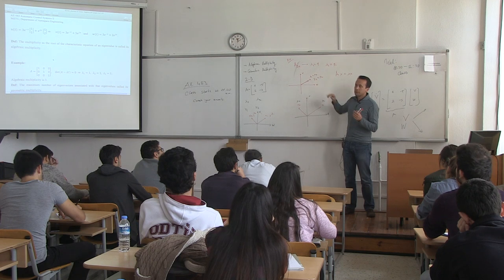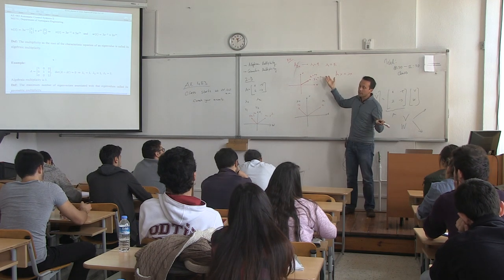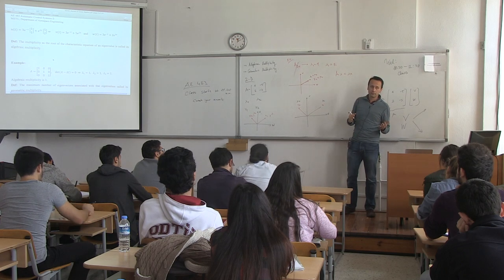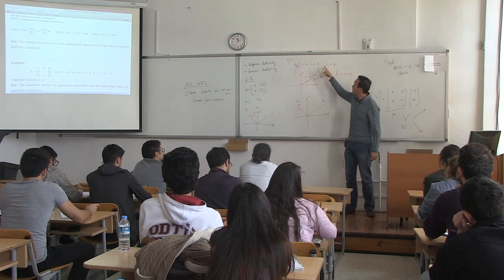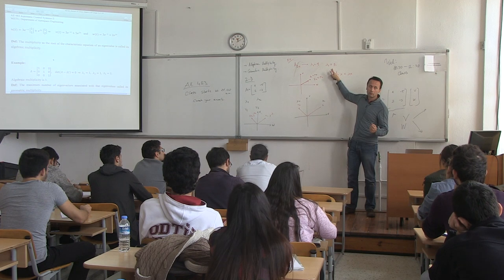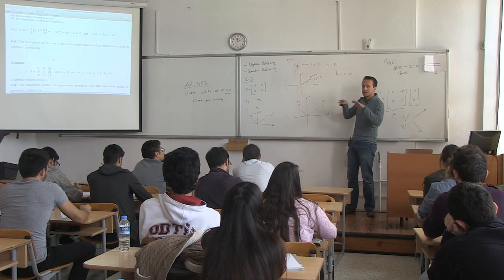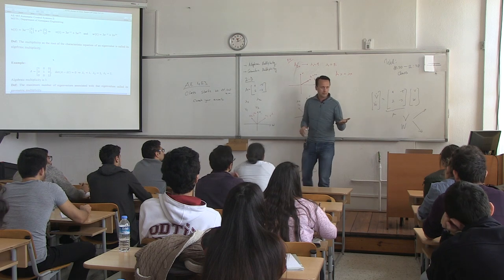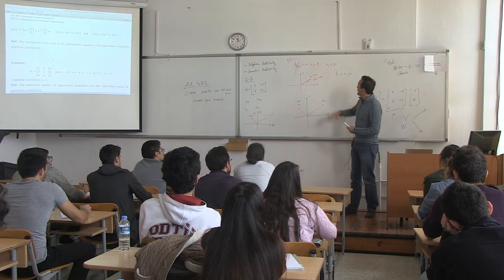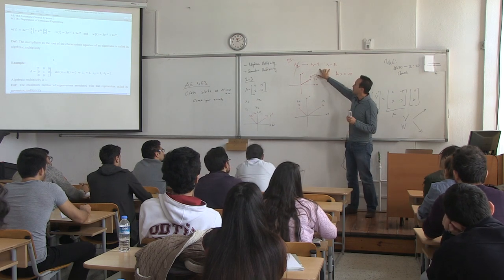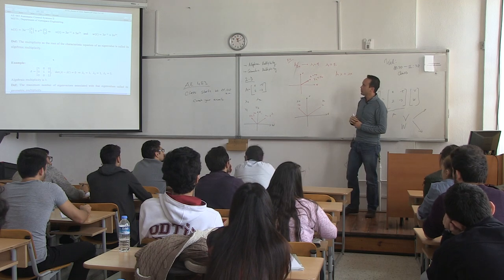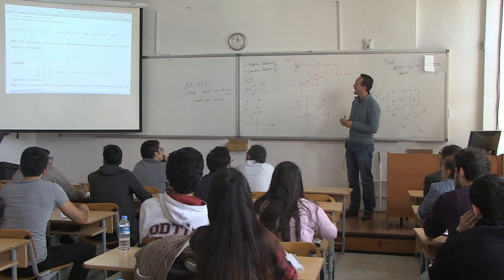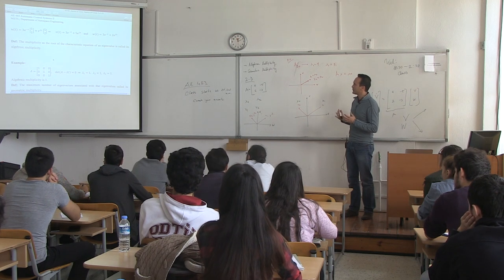That's how we distinguish between algebraic multiplicity and geometric multiplicity. The algebraic multiplicity is the multiplicity of an eigenvalue as a root of the characteristic equation — basically how many times it appears.